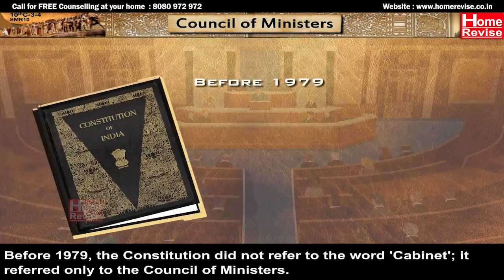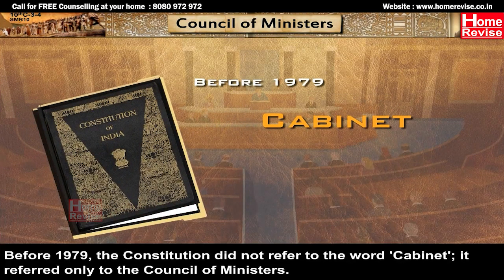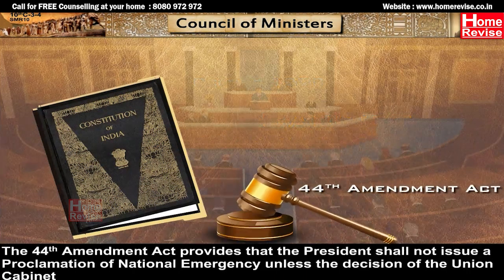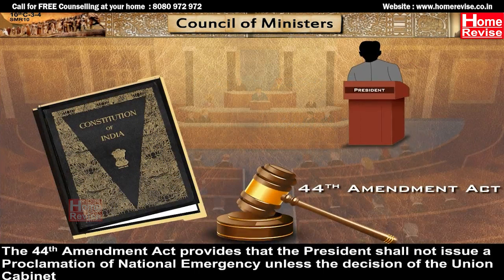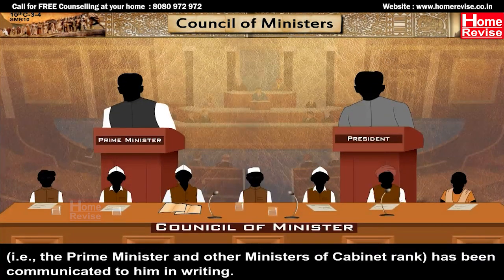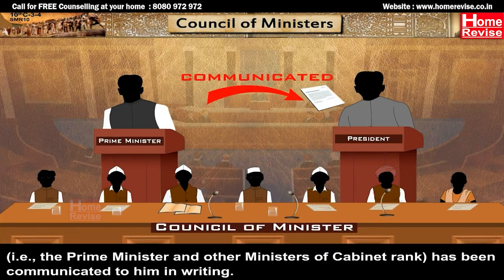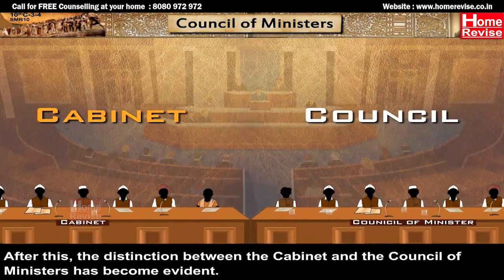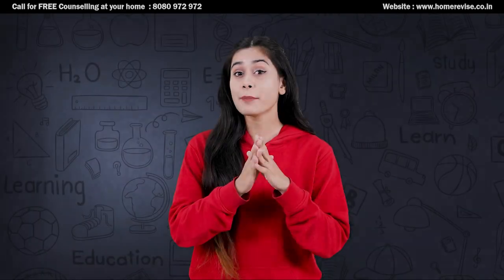Before 1979, the Constitution did not refer to the word Cabinet — it referred only to the Council of Ministers. The 44th Amendment Act provides that the President shall not issue a proclamation of national emergency unless the decision of the Union Cabinet — that is, the Prime Minister and other Ministers of Cabinet rank — has been communicated to him in writing. After this, the distinction between the Cabinet and the Council of Ministers became evident.